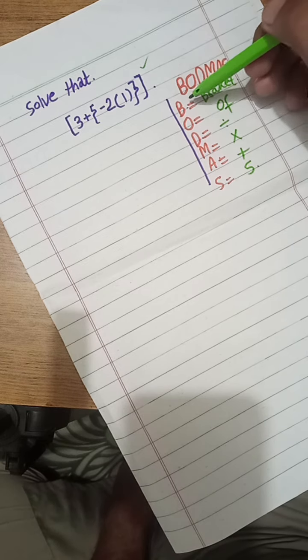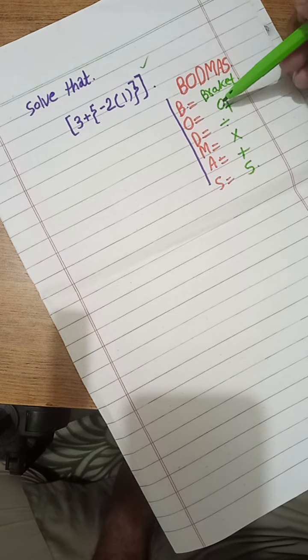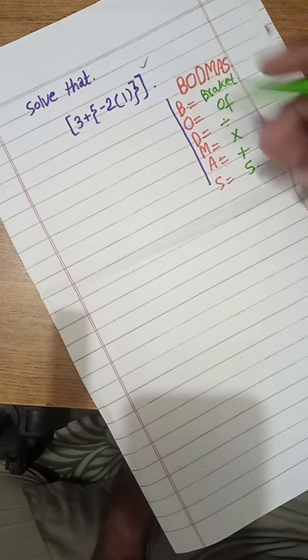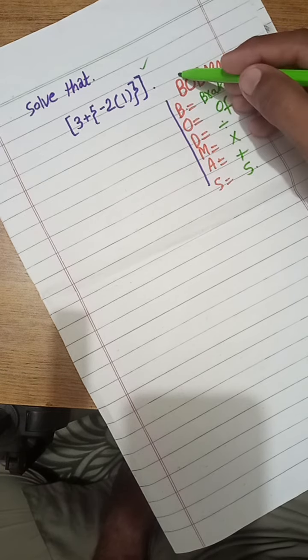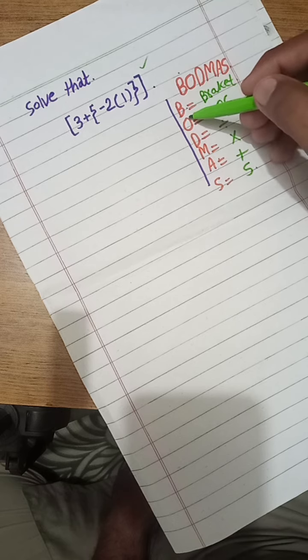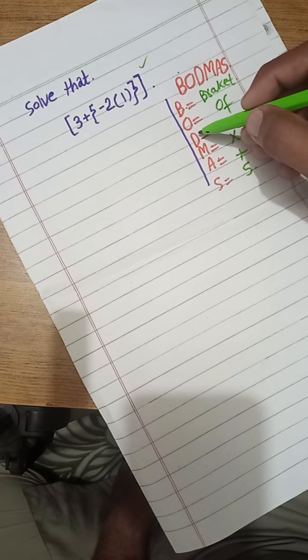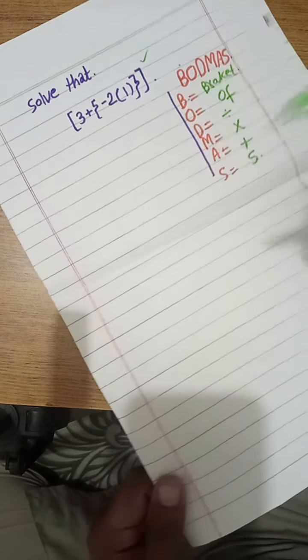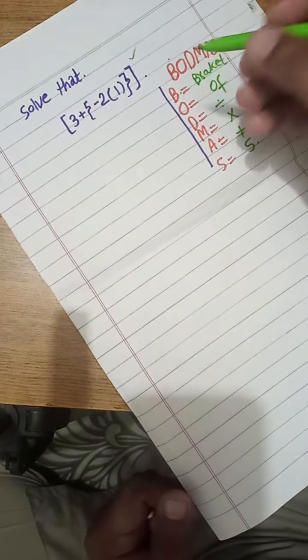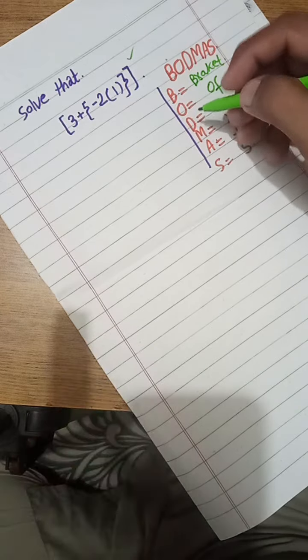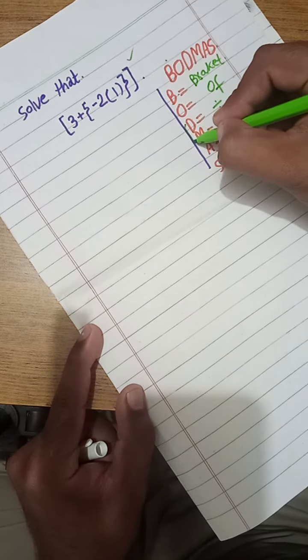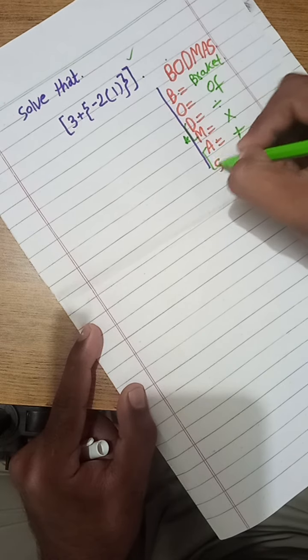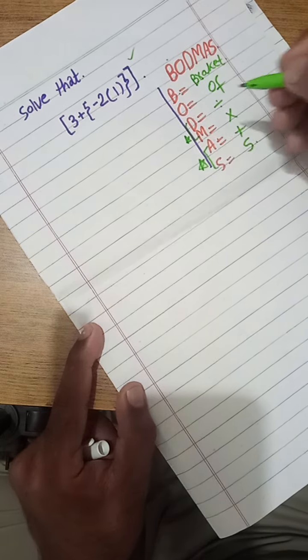We know that the BODMAS rule: B stands for bracket, O for of, D for division, M for multiplication, A for addition, and S for subtraction. Follow this pattern: first of all bracket, of, division, multiplication, addition, and subtraction. So by this rule we solve that question. Another thing to mind: division and multiplication have equal priority, and addition and subtraction have equal priority.